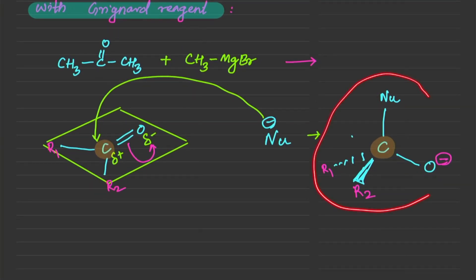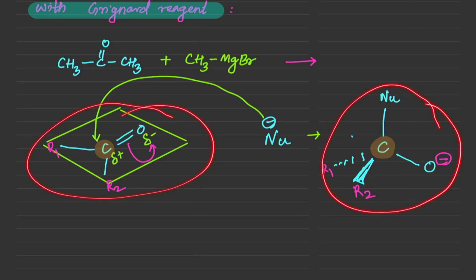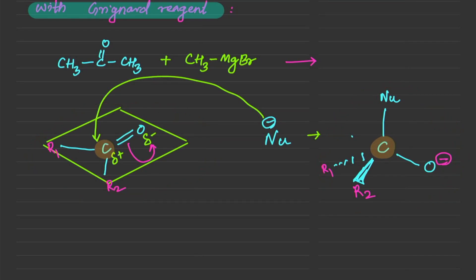Compare the geometry of the starting structure versus the intermediate. The starting carbonyl carbon was trigonal planar, but the intermediate is tetrahedral.